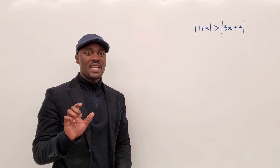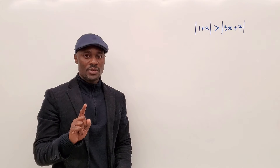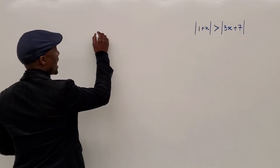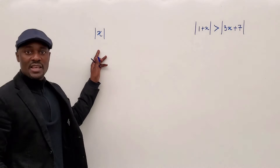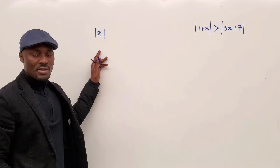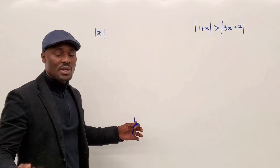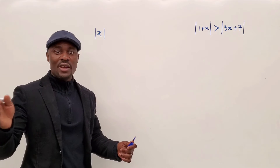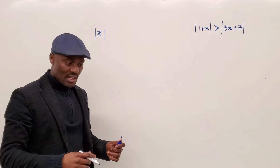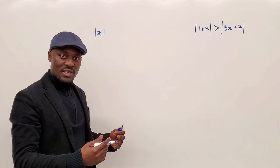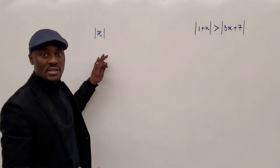The absolute value of any number is the distance of that number from zero. So the absolute value of x is how far x is from zero. It's possible that x is positive or negative. X could be any number — as long as you can count how many steps you have to take to get to that number from zero, you have found the absolute value. And since you're counting, you only count in positive numbers. So all answers of absolute value are positive.